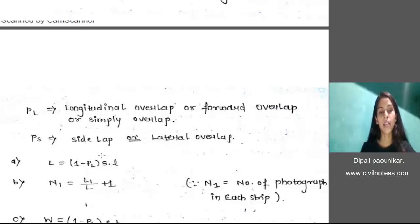Second one is N1 equals L1 upon L plus 1. This N1 denotes the number of photographs in each strip.